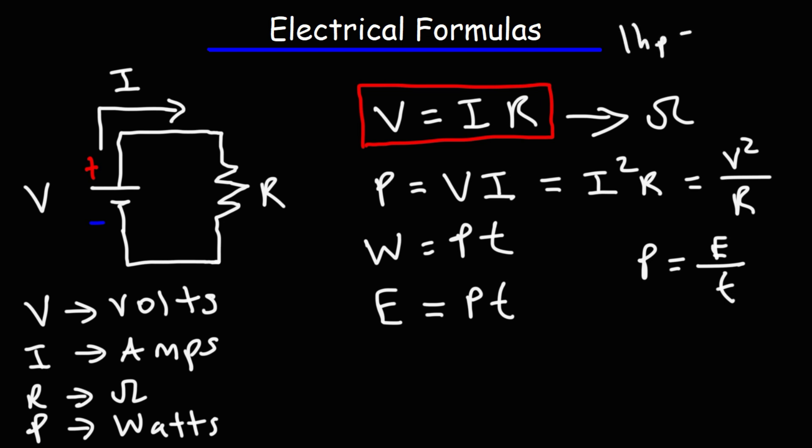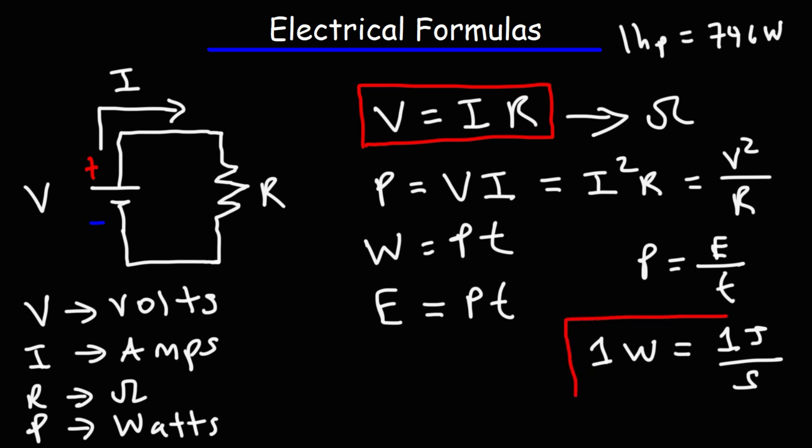One horsepower is equal to 746 watts. One watt is one joule per second. So if you have a resistor dissipating 50 watts of power, it's converting 50 joules of electrical energy into heat every second. A resistor dissipating 100 watts converts 100 joules into heat per second — so in two seconds, 200 joules, and in three seconds, 300 joules. Electrical power is the rate at which electrical energy is being transferred from one device to another per second.